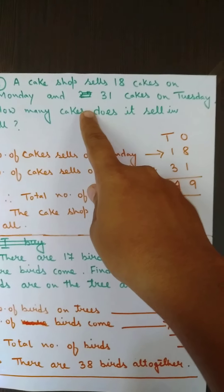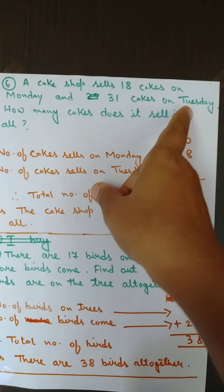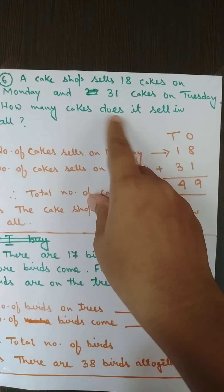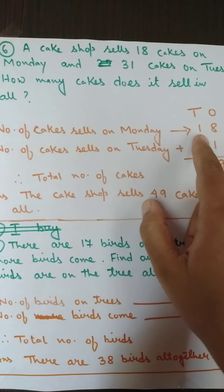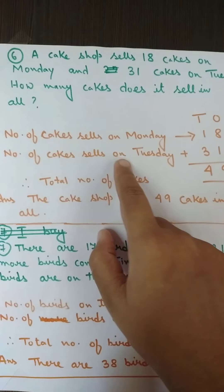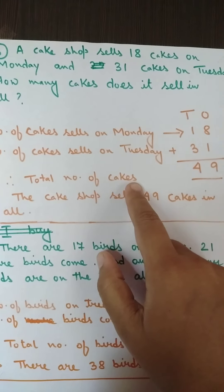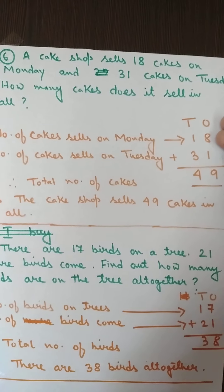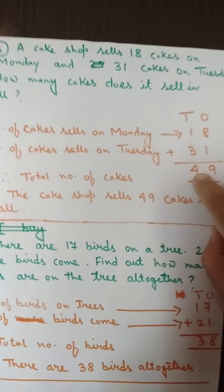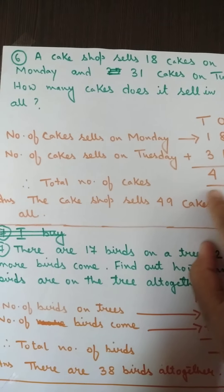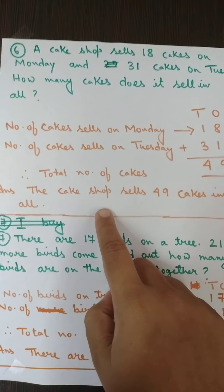Number six: A cake shop. You all love to have cakes! A cake shop sells 18 cakes on Monday and 31 cakes on Tuesday. How many cakes does it sell in all? Number of cakes sold on Monday is 18, number of cakes sold on Tuesday is 31. Therefore, total number of cakes: 1 plus 8 is 9, and 3 plus 1 is 4 — so the answer is 49. Total number of cakes is 49.